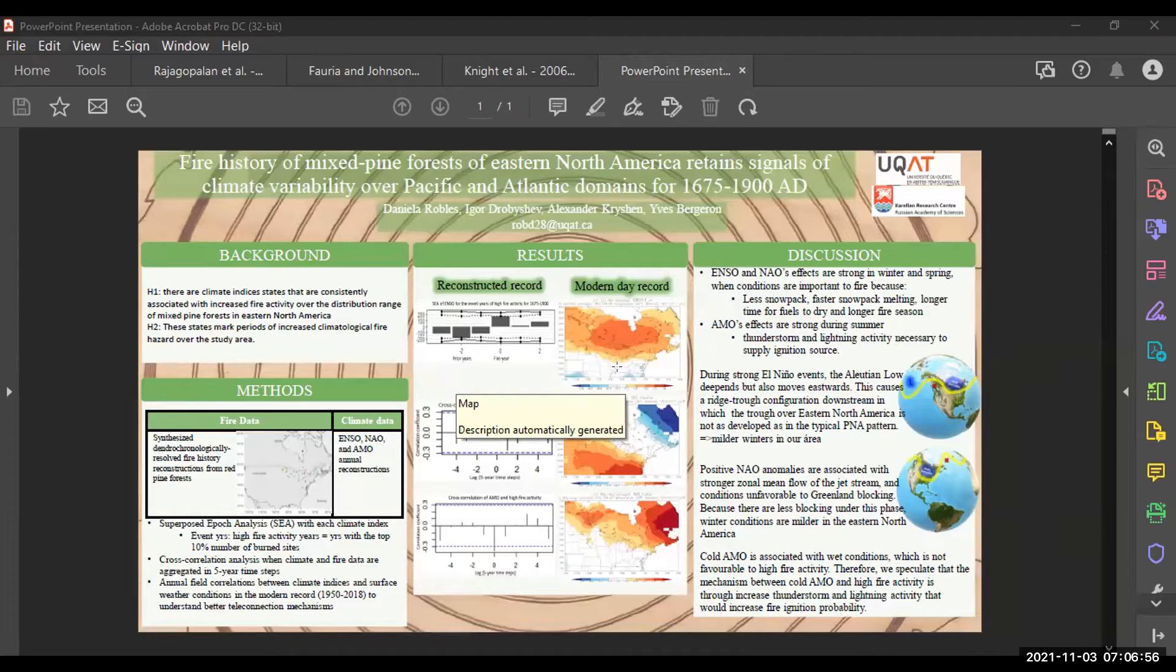So now we can get into the science and I hope you're ready because there will be some action as my advisor would say. So I'm going to present some of the results I got for one of the chapters of my PhD project. I looked at the signal of the climate in the fire history of mixed pine forests in eastern North America, and for the climate I specifically was interested in large-scale patterns of climate variability captured in climate indices that operate in the Pacific Ocean and the Atlantic Ocean.